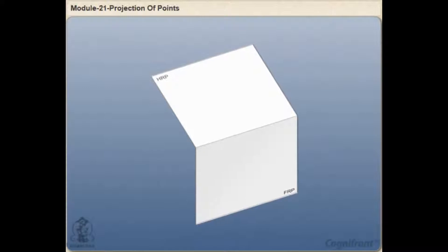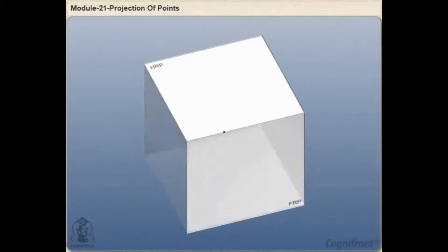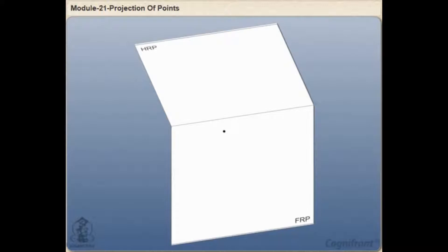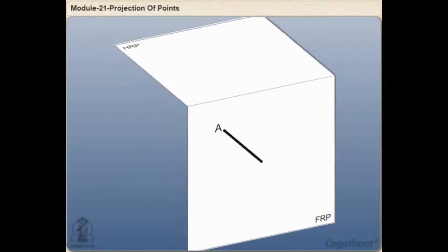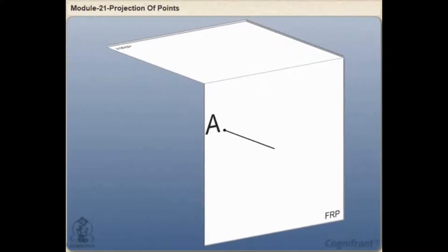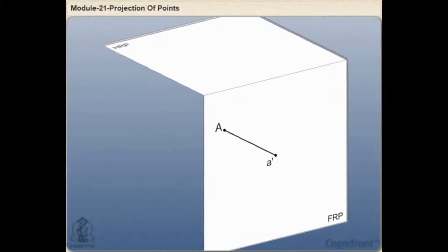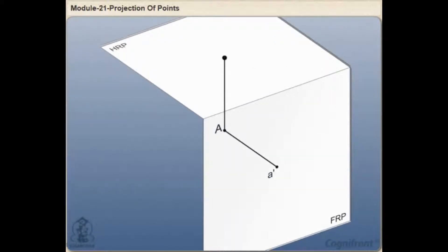Observe the point object A is in the third quadrant at a height of h units below the HP and a distance of d units behind the VP. Then the front view point A will be a point A dash on VP, and its top view will be a point A on HP.